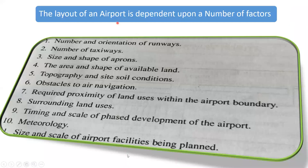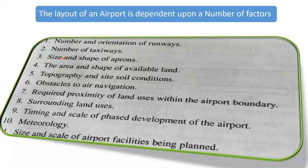The layout of an airport is dependent upon a number of factors. The first is the number and orientation of the runways — we will see what are different ways of orientation of runways in the next module. Next is the number of taxiways, size and shape of the apron, the area and shape of available land, topography and the subsoil condition, what is the nature of the soil, obstacles to air navigation, required proximity of land uses within the airport boundaries, surrounding land uses, timing and scale of phased development of the airport, meteorology, and the size and scale of airport facilities being planned.